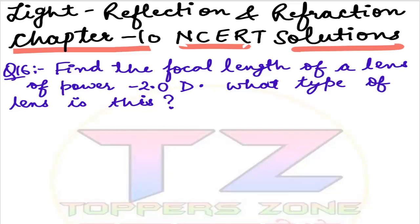Let's start with today's video - question number 16. Find the focal length of a lens of power minus 2.0 diopter. What type of lens is this? Here we find out the focal length where we have power is minus 2.0 diopter. We have a formula which is the power formula: P equals 1 by f, the reciprocal of the focal length.